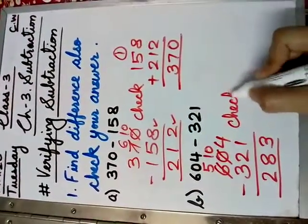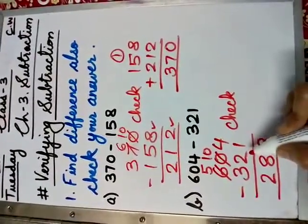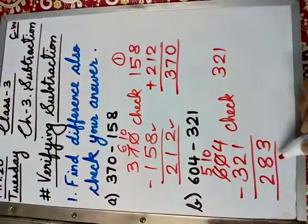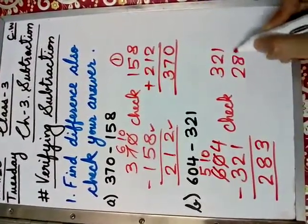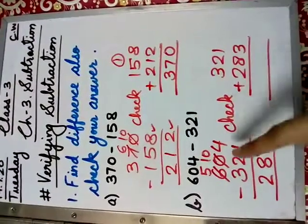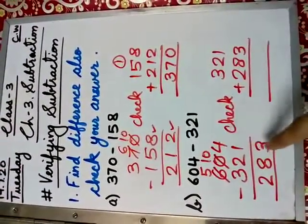Now, how to check? First, write the subtrahend that is 321. Then, write the difference that is 283 and find the sum. If the sum is the same as the minuend, your answer is correct.